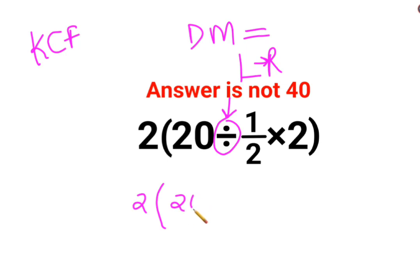So 20, K means keeping the first number as it is. So I have kept 20 as it is. C stands for changing the division sign to multiplication. And F stands for flipping or taking reciprocal of 1 upon 2 which is just 2 multiplied by 2.